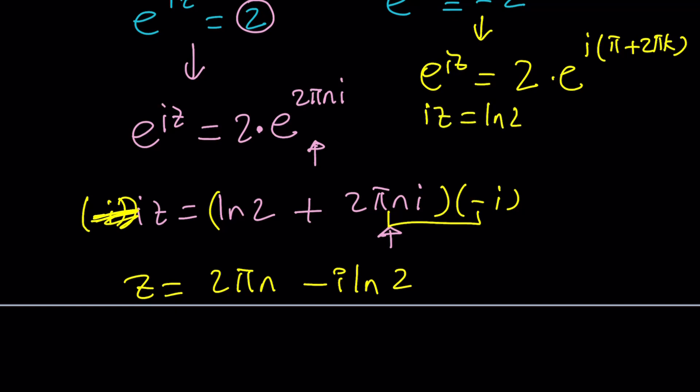iz equals ln 2. You're still going to have an ln 2 piece, but the next part is going to be slightly different. So, at this point, after multiplication by negative i, z should be negative i ln 2.